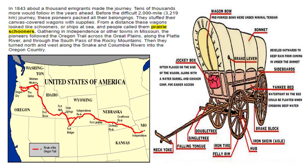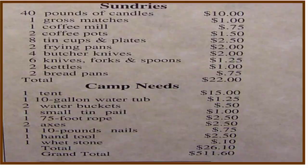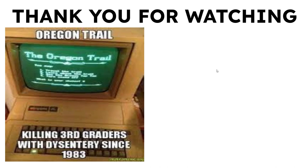Before we go, I wanted to show you a couple of listings of items they would have taken and how much things cost back then — for example, 400 pounds of bacon for $40. That would be a steal today! And here is another listing of sundries and supplies you would need to make the trip go successfully. Thank you for watching — and as a fun note, Oregon Trail has been killing third graders with dysentery since 1983. I definitely played that game a long time ago. Well, thank you so much for watching and have a great day.